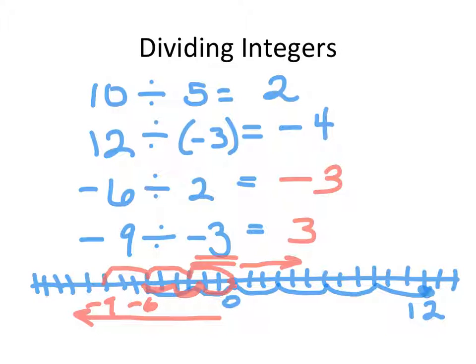Integers is quite an abstract concept for students, and sometimes for teachers. It can be quite confusing because it's representing something that isn't really there — when we talk about negatives, we're talking about something we don't have. So using a number line or using a picture is very important to help students understand.